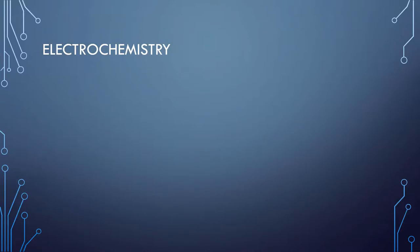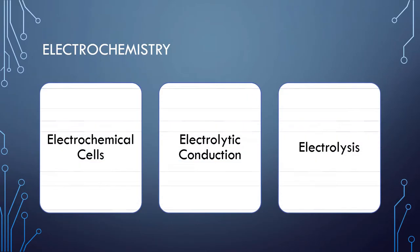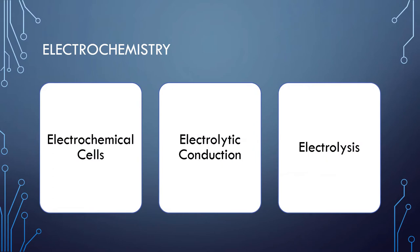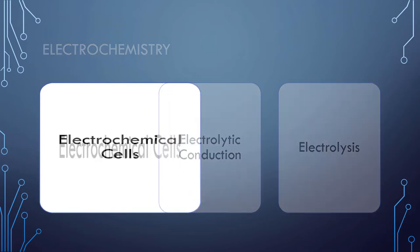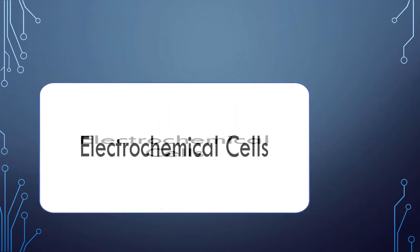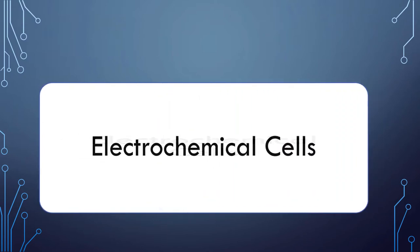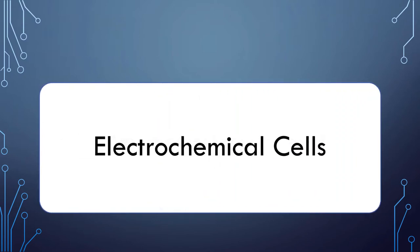The three main aspects in the study of electrochemistry are electrochemical cells, electrolytic conduction, and electrolysis. Let us first talk about electrochemical cells.